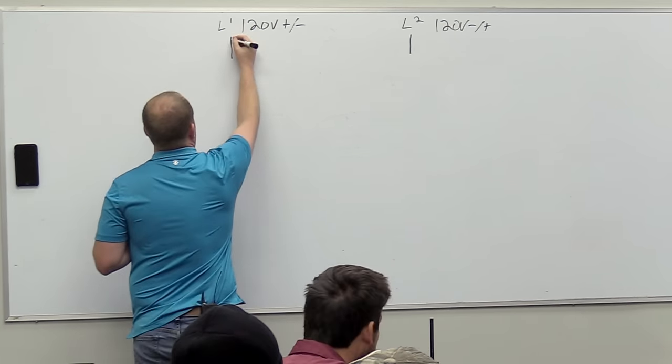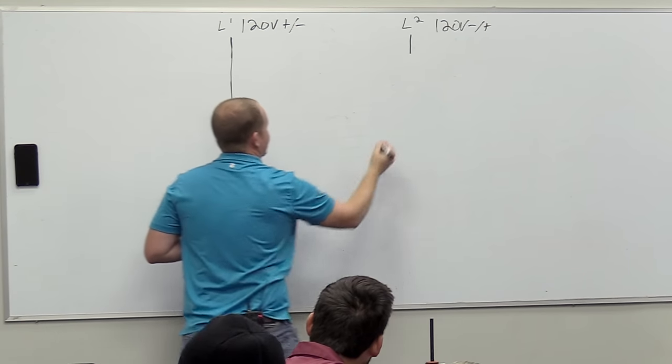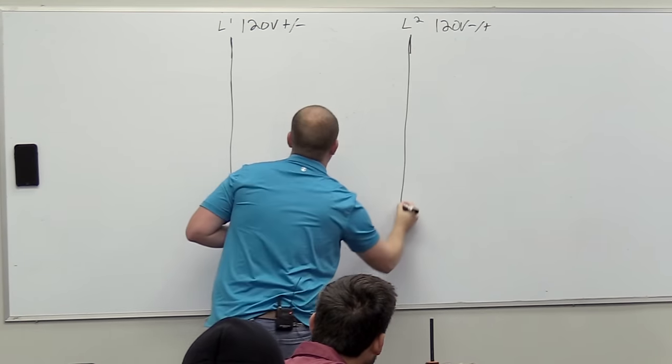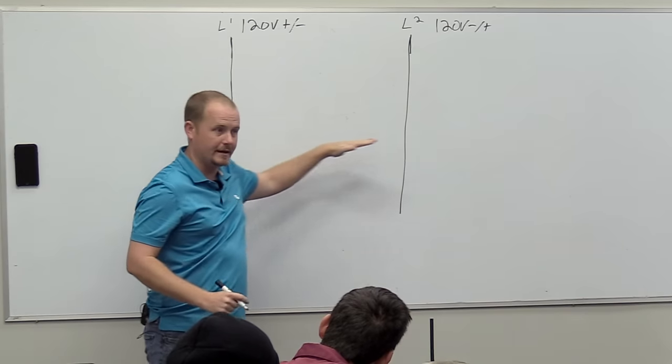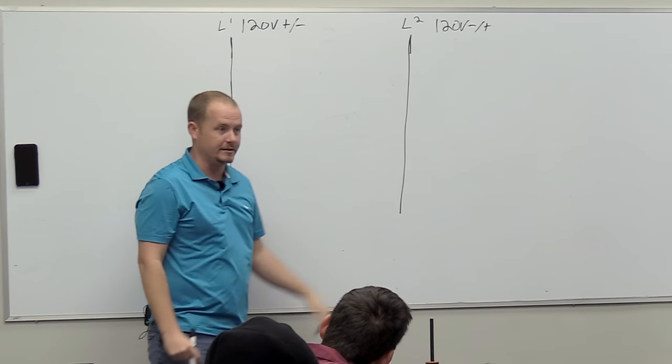Alright, so now we're gonna build a ladder diagram. And when we build a ladder diagram, we really just kind of take lines between these two points, and then that way we can make circuit connections in between these two lines. So we're just making different circuits in between these two lines.